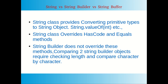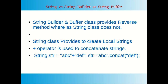Comparing two StringBuilder objects requires you to manually check the length of both objects and compare character by character. Alternatively, you can derive a class from StringBuilder and override these methods with a custom implementation, or convert the StringBuilder object to a String first and then compare.